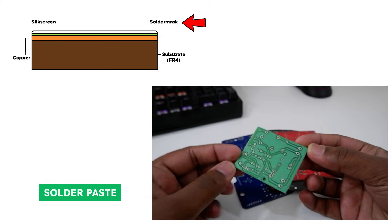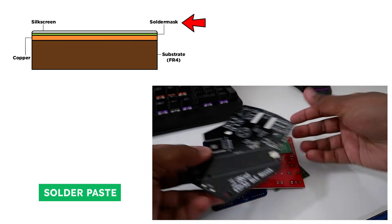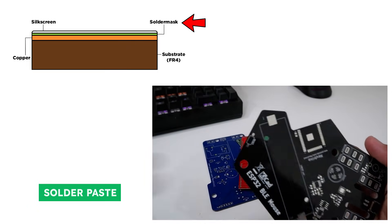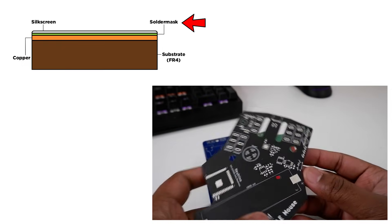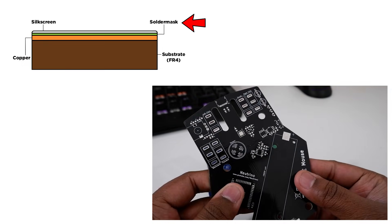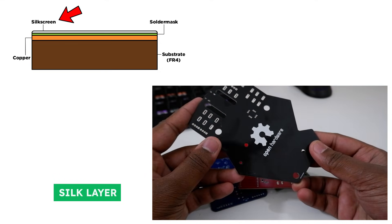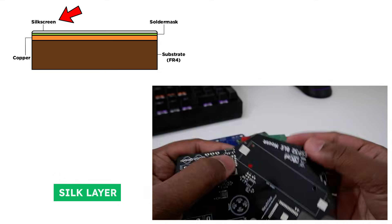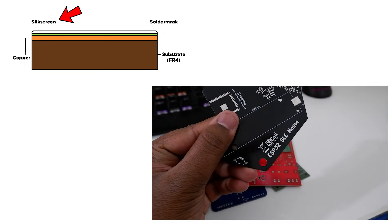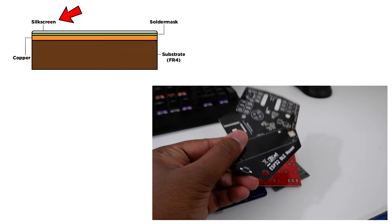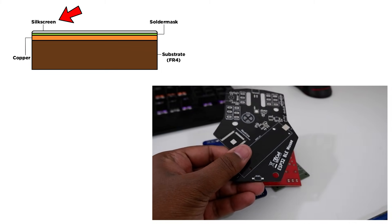However, the solder mask doesn't cover up everything on the board. It's applied in such a way that it covers the small traces and empty spaces, but exposes some space around the component pads so they can be soldered later. Finally, we have the silk layer. This is the topmost layer with names, letters, and symbols, usually white in colour. It makes the assembly and final working of the PCB way more convenient, and it does not add any physical or electrical feature to the PCB — it is just for appearance.